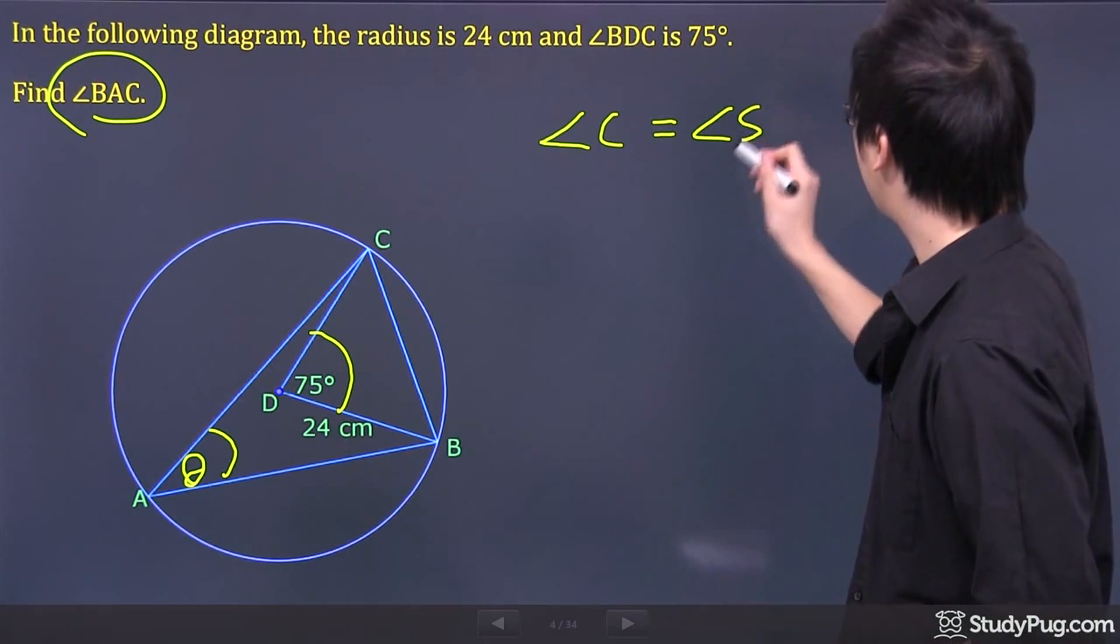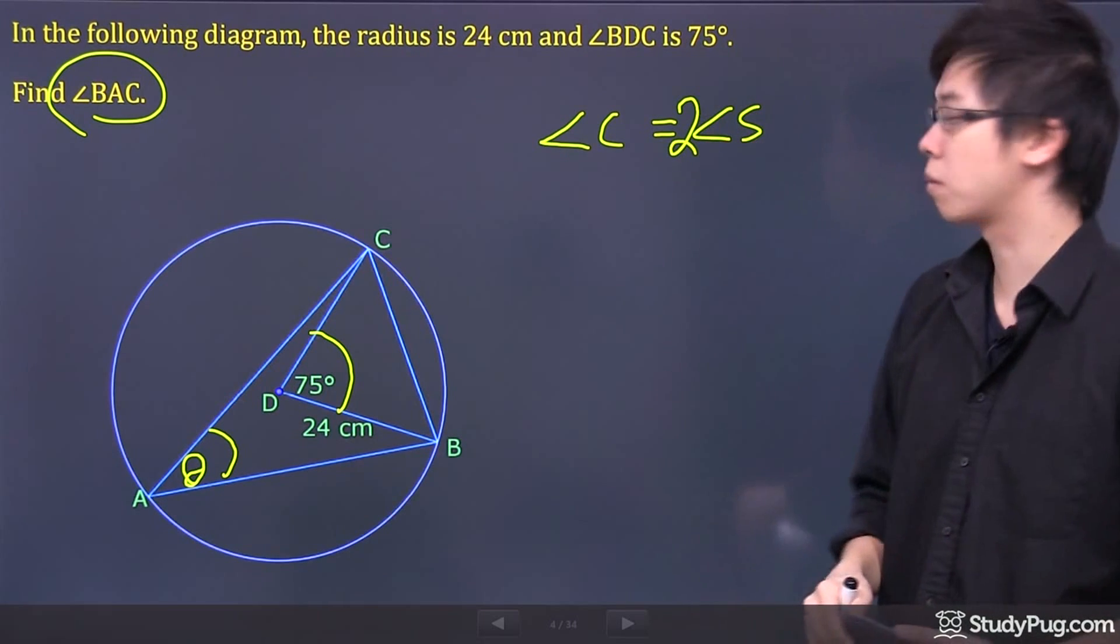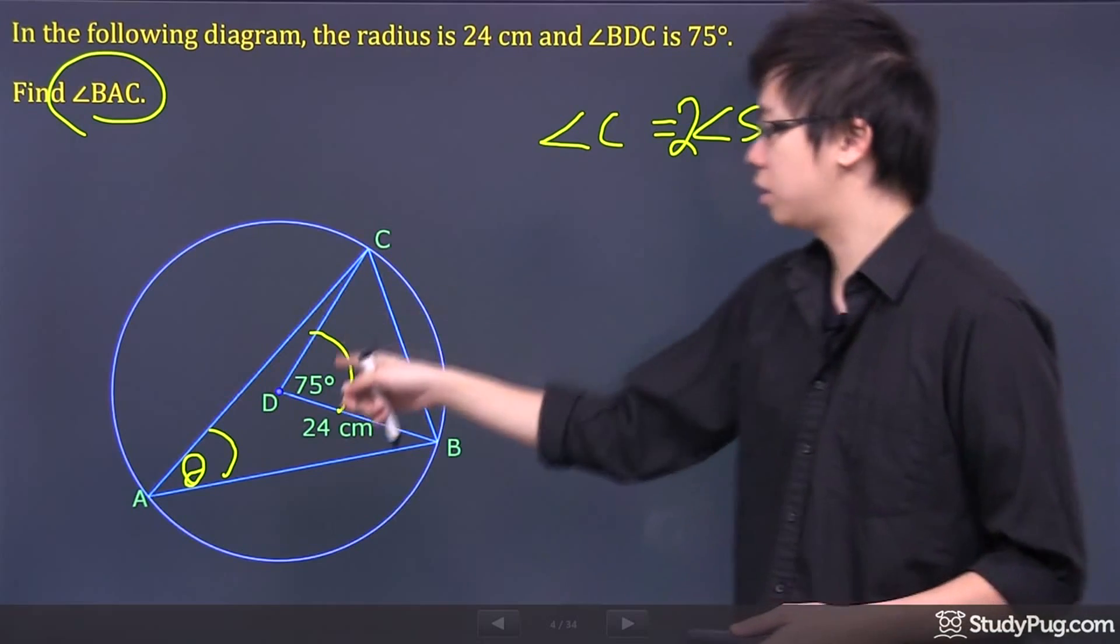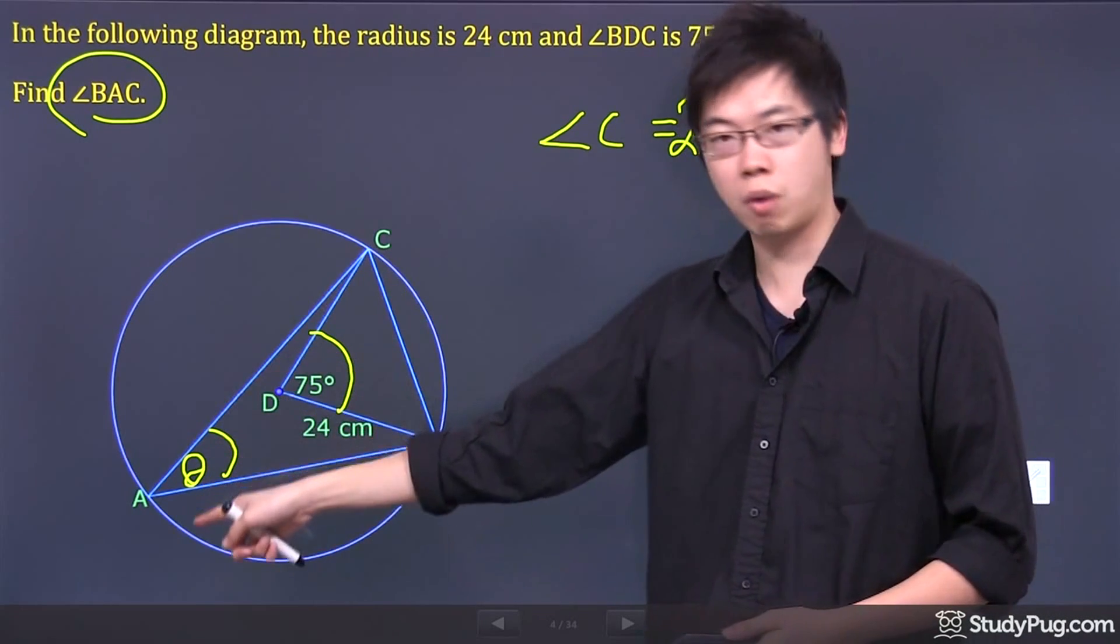It's equal to the inscribed angle, but you need to put it two times right there. Basically, the central angle is double the inscribed angle.